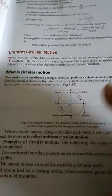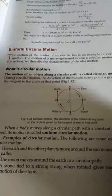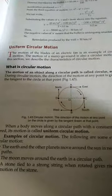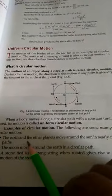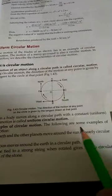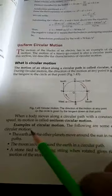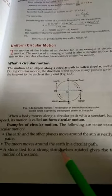But the magnitude of the velocity is constant in uniform circular motion. Examples: the earth and the other planets move around the sun in nearly circular paths.